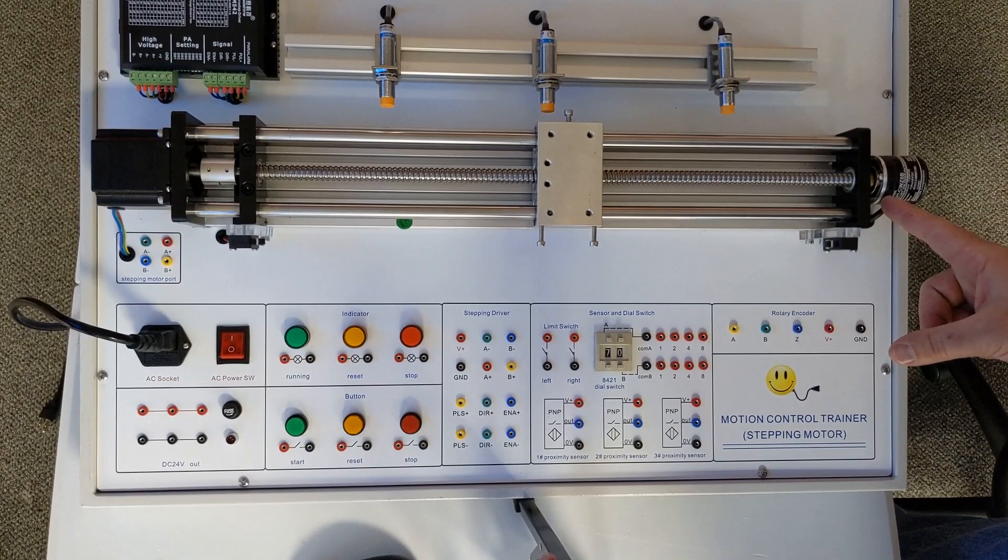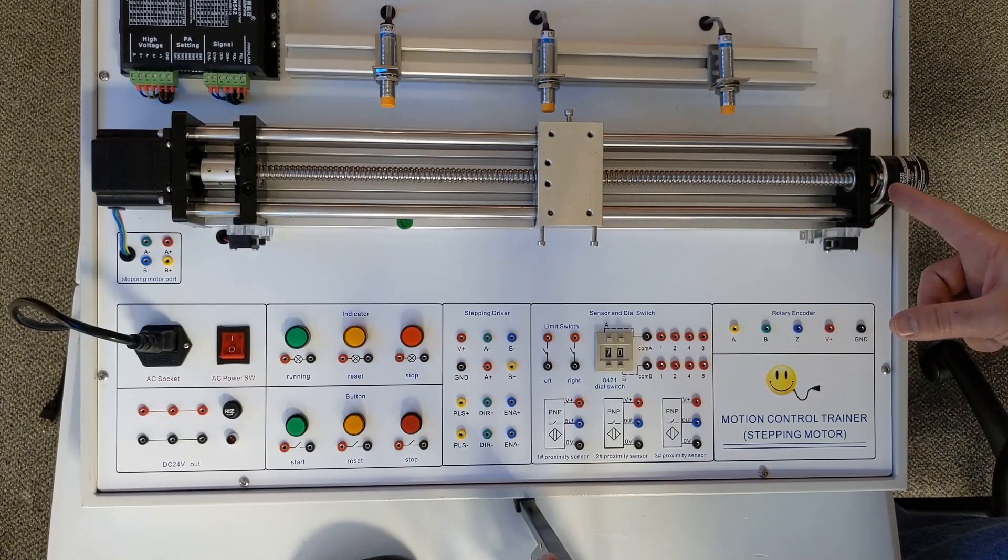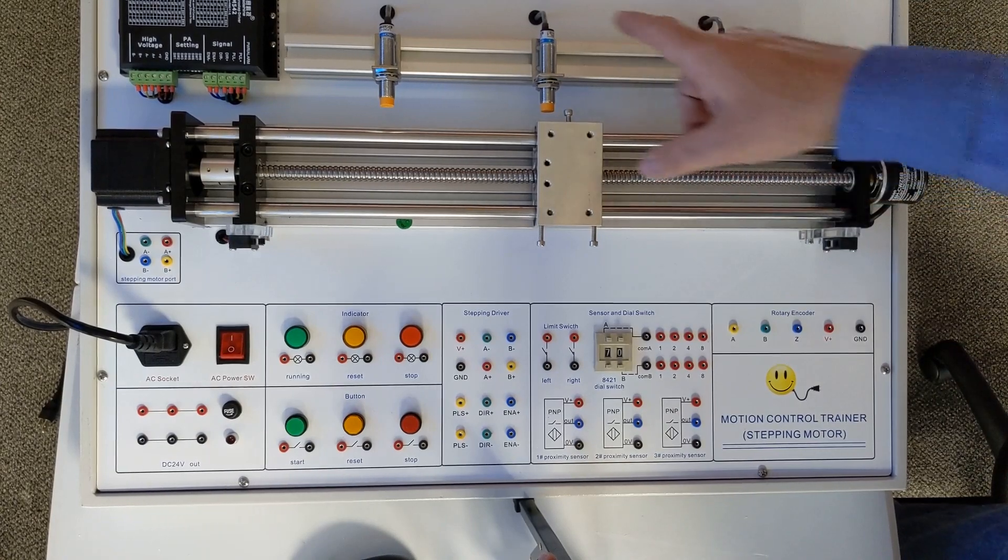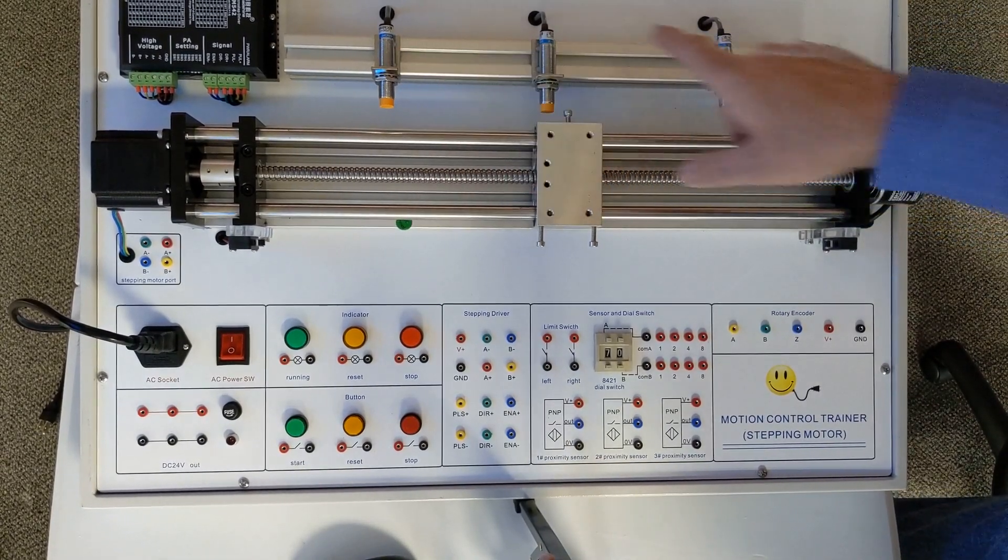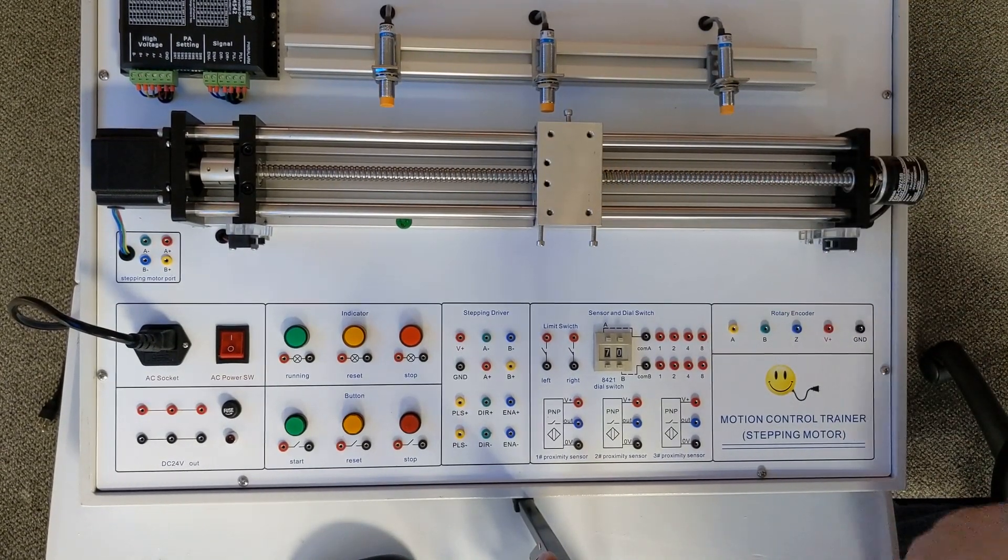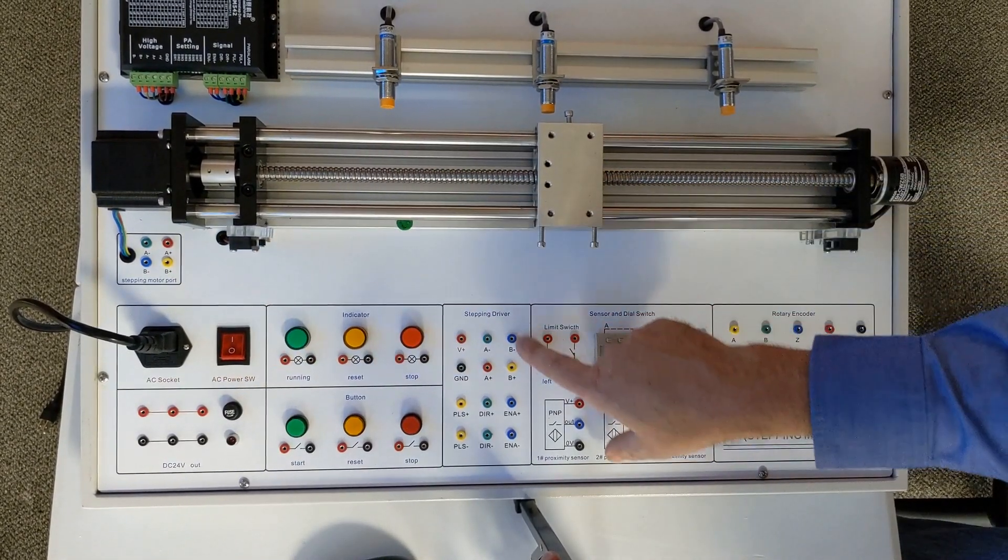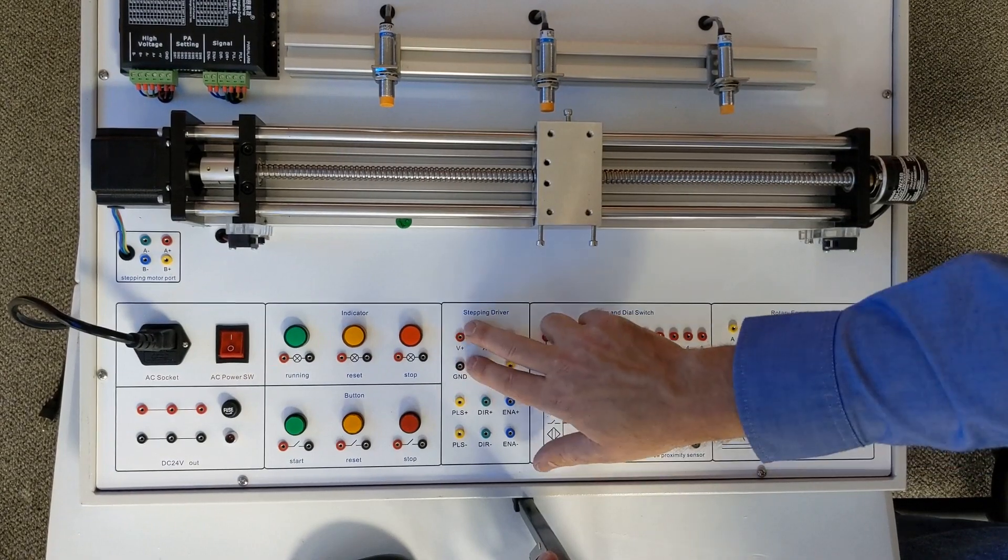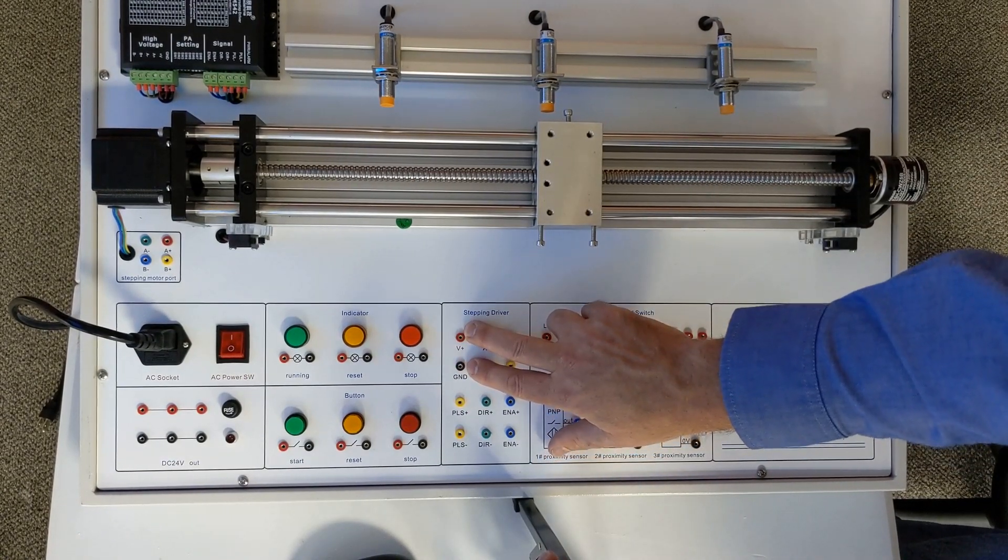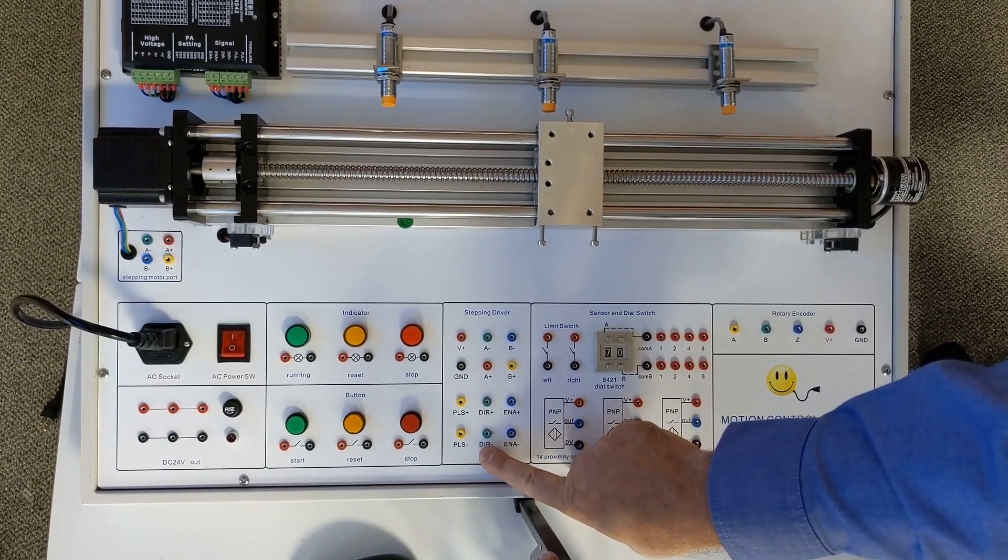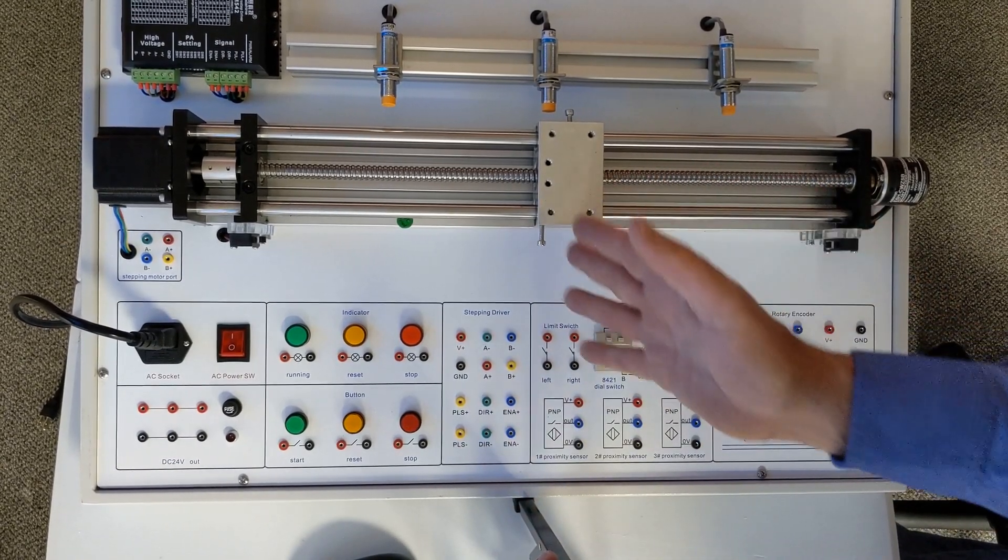On this end we have an encoder that we're going to connect to our high speed counter and we're going to use it to get the exact position. We also have these three switches that we can use for specific positions. Down here is the stepper motor and we're going to connect it over here to the stepper driver which is powered off of 24 volt.